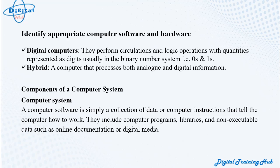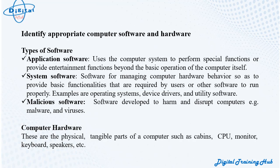Components of a computer system — Computer software is a collection of data or computer instructions that tell the computer how to work, including computer programs, libraries, and non-executable data such as online documentation or digital media. Types of software: Application software — uses the computer system to perform special functions beyond basic operation; System software — manages computer hardware behavior to provide basic functionalities, e.g., operating systems, device drivers, and utility software; Malicious software — developed to harm and disrupt computers, e.g., malware and viruses.